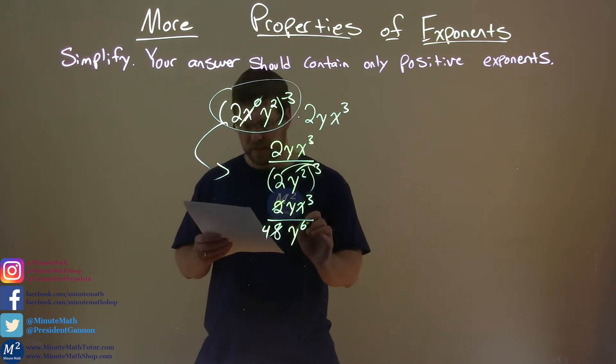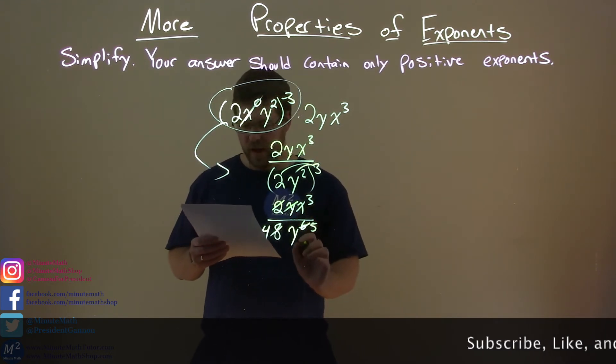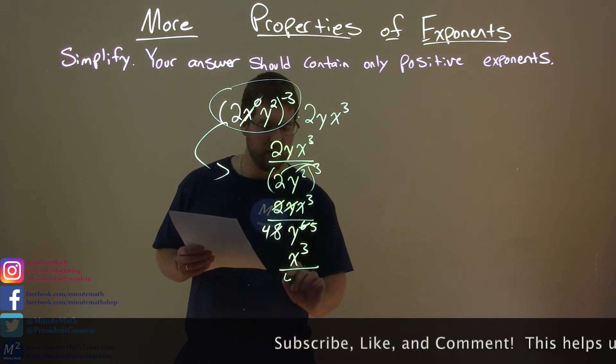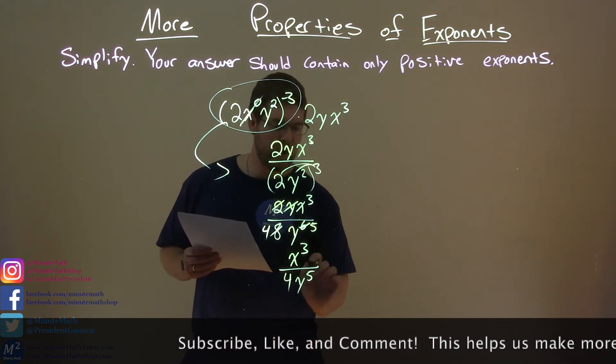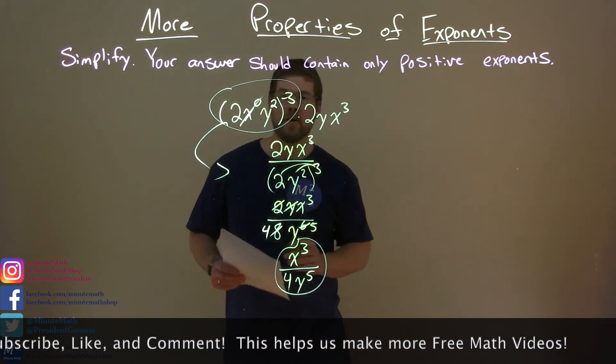y to the sixth cancels out with this one y, that y is gone, and y to the fifth. So lastly, we're just done. We have x to the third coming down, simplify, 4 here, y to the fifth power, and now we are done. That is our final answer.